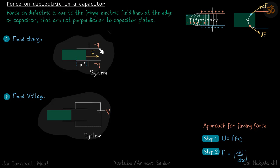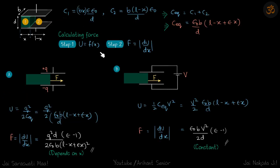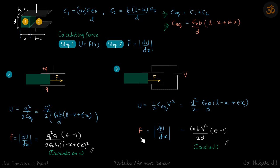To recap: when charge is constant we use the energy equation Q²/(2C); when voltage is constant we use ½CV². V is held constant in one case and Q is held constant in the other. Differentiating gives the force on the dielectric.